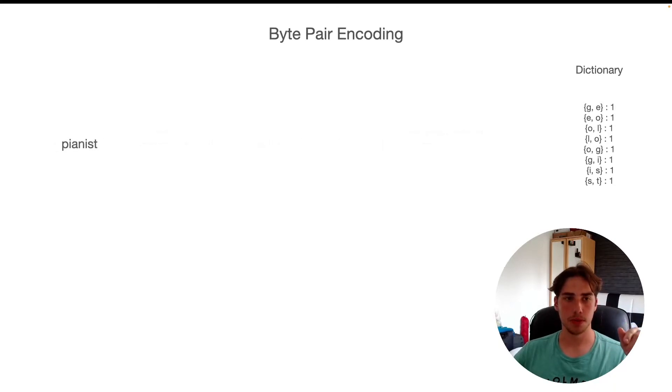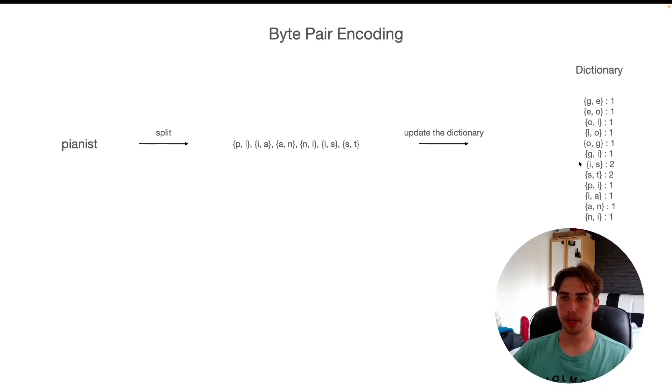When we pass the next word, which is 'pianist,' again we split it, get our pairs, and we update our dictionary. In this case we see some of these pairs are occurring again, right? Since we only got two examples here, we use this dictionary, but obviously you repeat this process for each word in your dataset. Normally you create this dictionary for each word in your dataset.